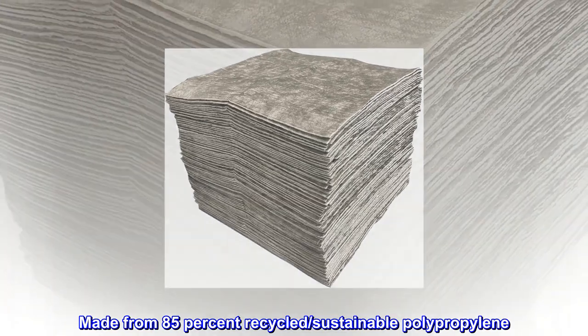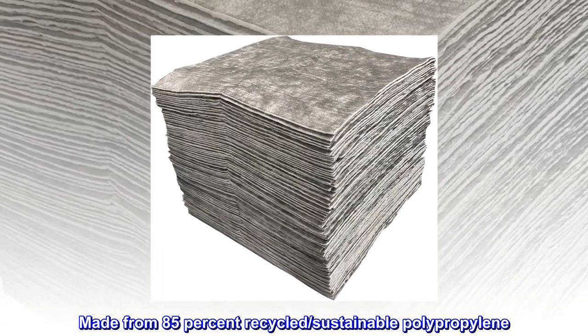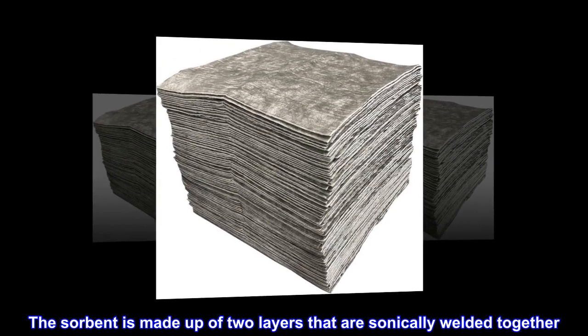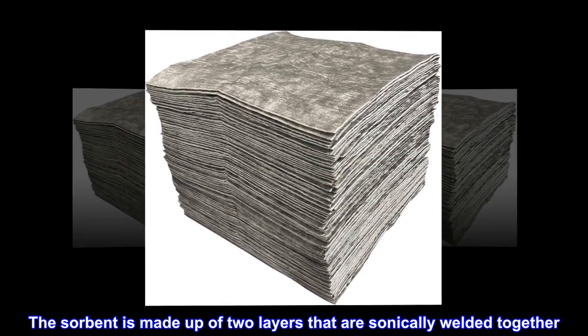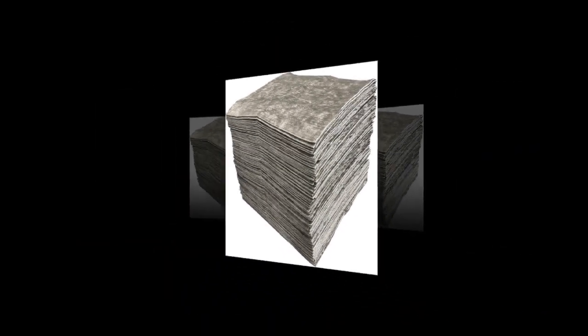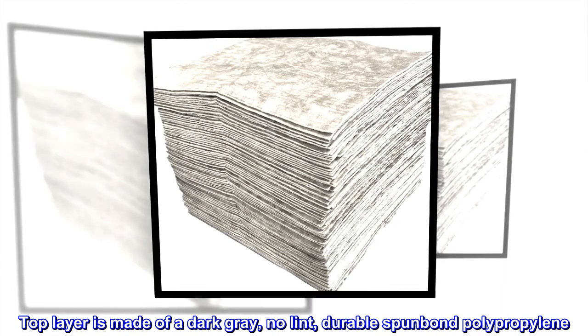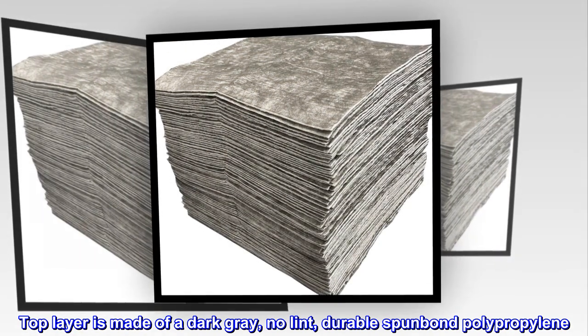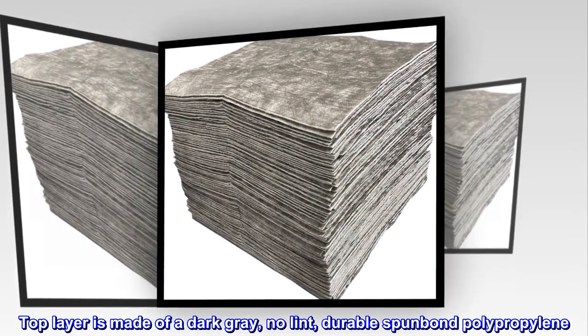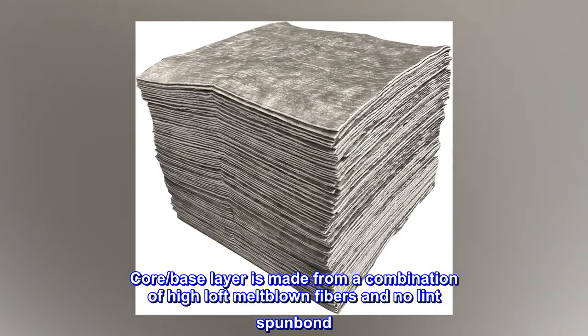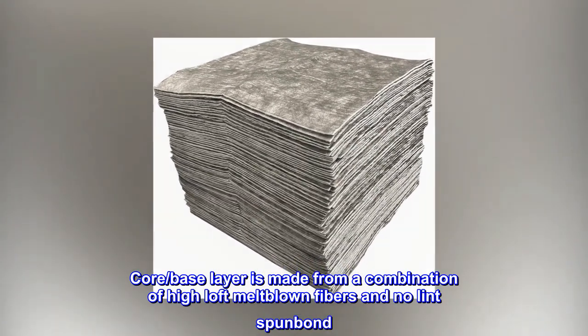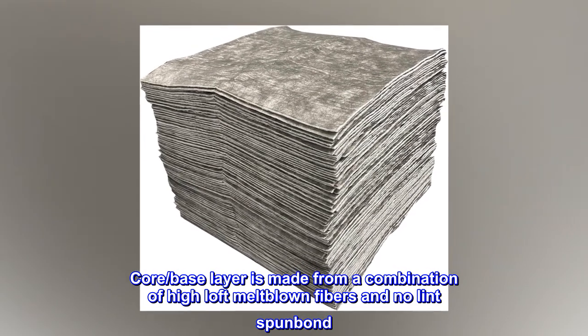Made from 85% recycled sustainable polypropylene, the sorbent is made up of two layers that are sonically welded together. The top layer is made of a dark gray, no-lint, durable spun bond polypropylene. The core base layer is made from a combination of high loft melt blown fibers and no-lint spun bond.